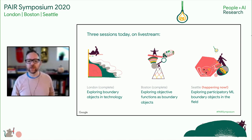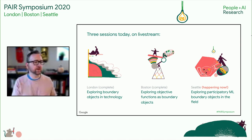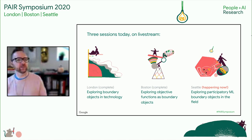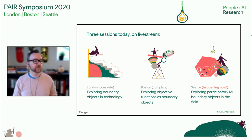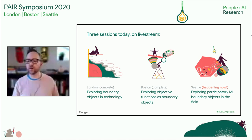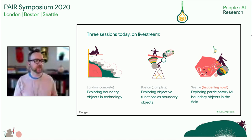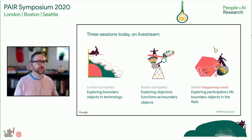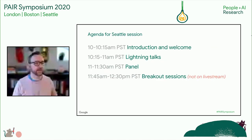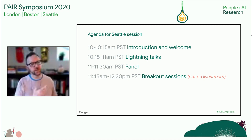We've had two really great sessions already. One in London led by Fernando Villegas on exploring boundary objects in technology, and the second was in Boston with Martin Wattenberg on exploring objective functions as boundary objects. Our session here, hosting from Seattle, is exploring participatory ML boundary objects in the field, in practice, in use already. If you missed either of the other sessions, everything will be posted to our YouTube channel after our event.